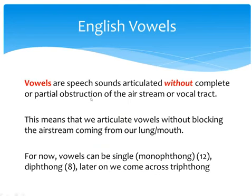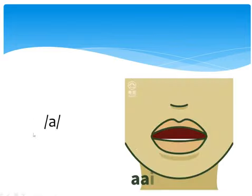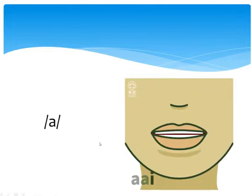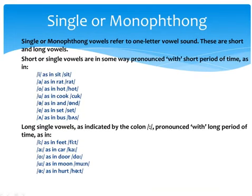Vowels, on the other hand, do not involve obstruction of the airstream or vocal tract. When we articulate vowels, we do so without blocking the airstream coming from our lungs and mouths. For example, we say 'ah' — there is no obstruction of the airstream.